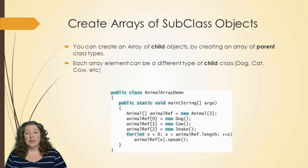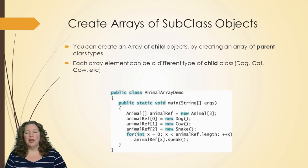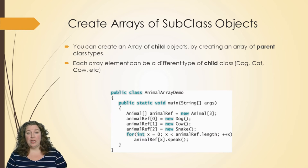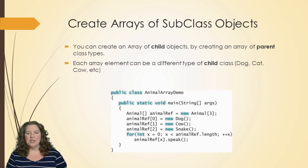As alluded to in the last slide, we can create arrays of subclass objects. The same way we changed animal reference from a cow to a dog, we can create an array of animals and put in dogs, cows, snakes, and birds — all into a single array. Remember, arrays need to have the same type, and in this case they do: they are all animals, even though they're different types. You can put all your pets into one array called my pets, and they're all animals — it makes things convenient.